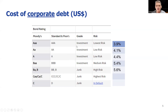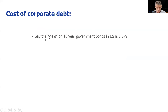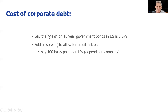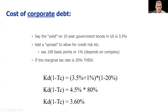If you've got a rating, you can go and see what the current cost of debt is from the rating agency. But many times we don't actually have a rating on our company — certainly for smaller companies. So we can estimate it. Let's say the yield on 10-year government bonds in the US is 3.5%; we then add about 1% because there's more risk in corporate bonds. If the corporate tax rate in the US is 20%, our after-tax cost of debt is going to be about 3.6%.